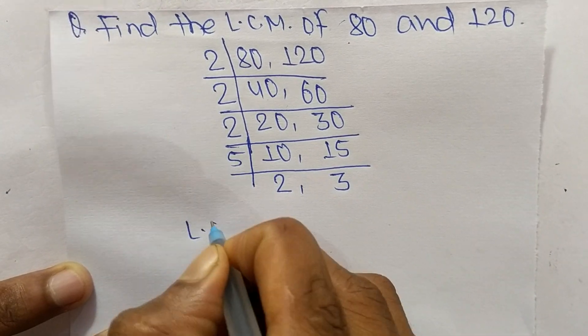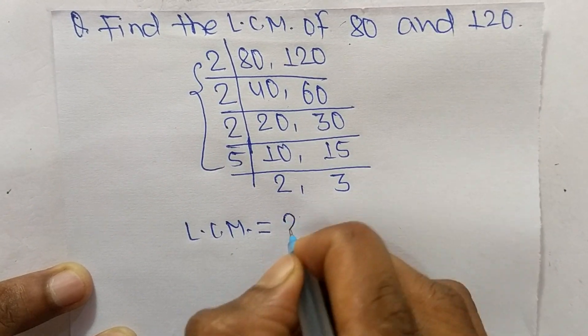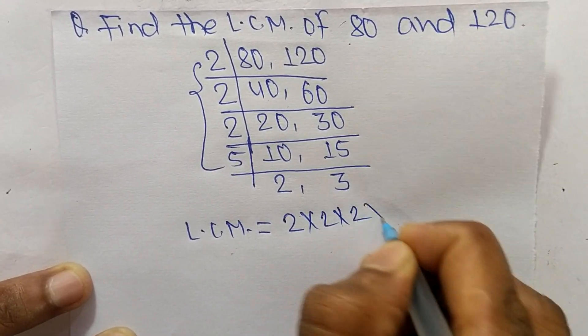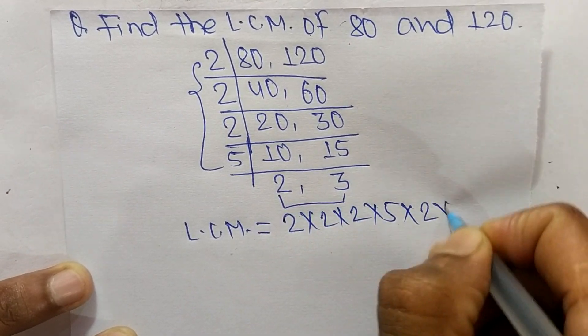So the LCM is equal to, from this part we have 2 times 2 times 2 times 5, and from this part we have 2 and 3.